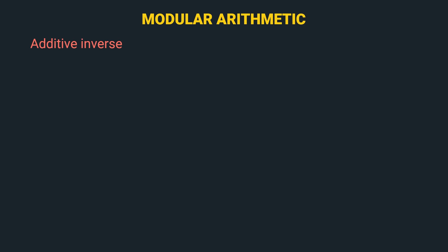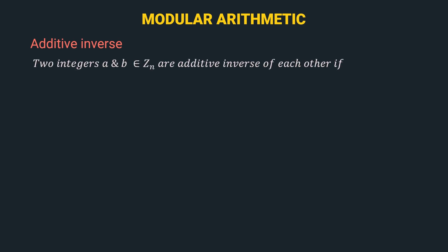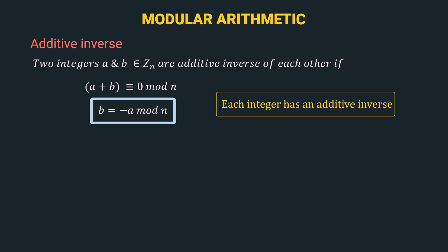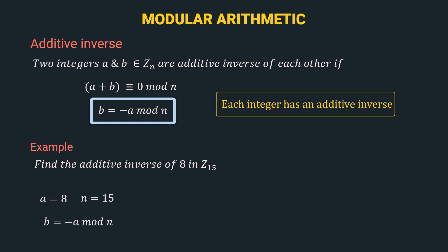Now, let's understand additive inverse. So, two integers a and b that belong to Zn are additive inverse of each other if a plus b is congruent to 0 mod n. That means a plus b mod n should be 0, and if it is true then b is the additive inverse of a and vice versa. The formula for calculating the additive inverse of an integer a is: b equals minus a mod n. Also an important note: each integer has an additive inverse. Let's take an example — find the additive inverse of 8 in Z15. So, your a is 8 and n is 15. Your b equals minus 8 mod 15. Here, since we are calculating mod of a negative number, we just add 15 to it — that is minus 8 plus 15 — which gives us 7. So, 7 is the additive inverse of 8 in Z15.